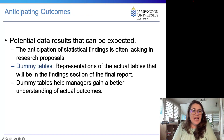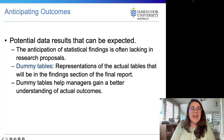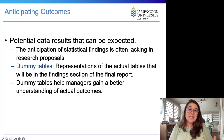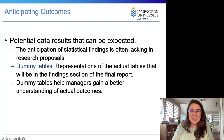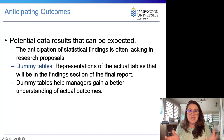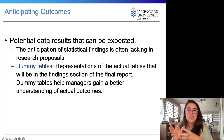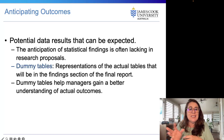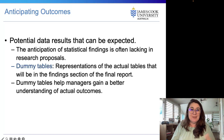When thinking about outcomes, the anticipation of statistical findings is often lacking in research proposals. Researchers and managers can anticipate the outcomes of a study through the use of dummy tables — tables filled with fictitious data to help clarify what the findings might be and whether they will meet the desired objectives.